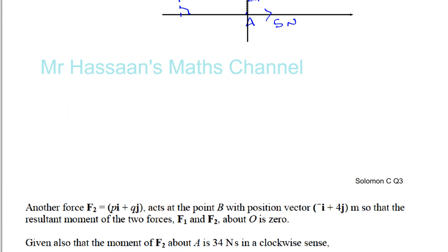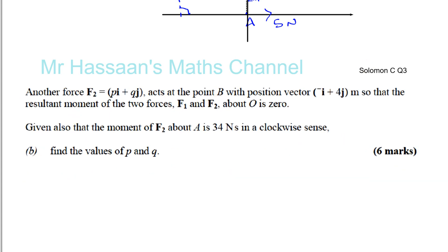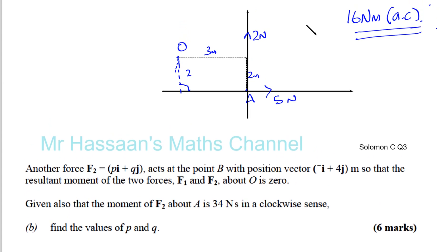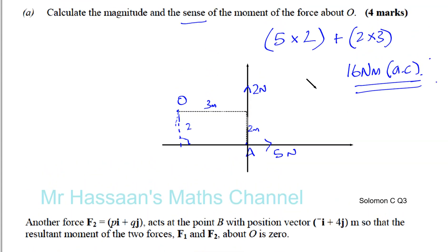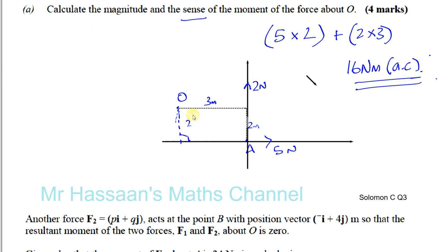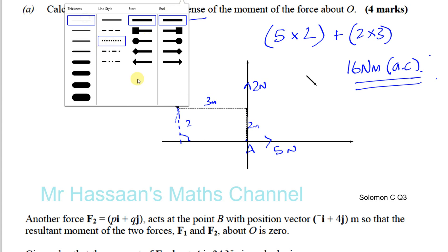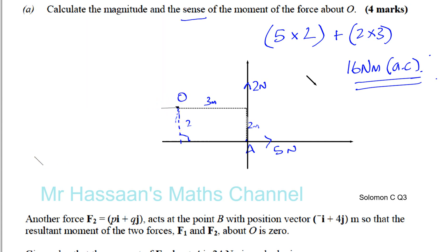...acts at point B with position vector −i + 4j meters. So −i means one unit to the left, and +4j means four units up. That's where point B is relative to the origin: one meter to the left and four meters up.